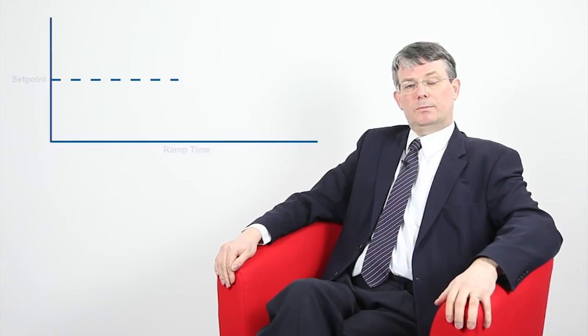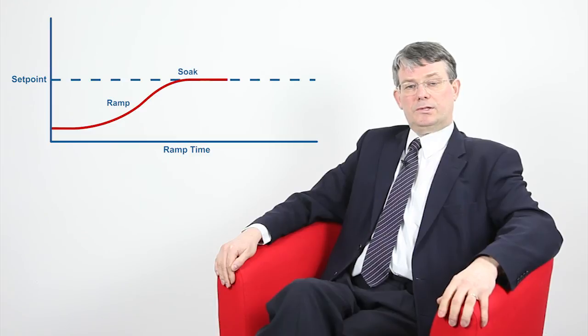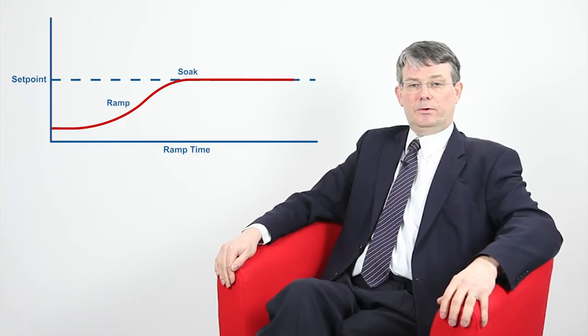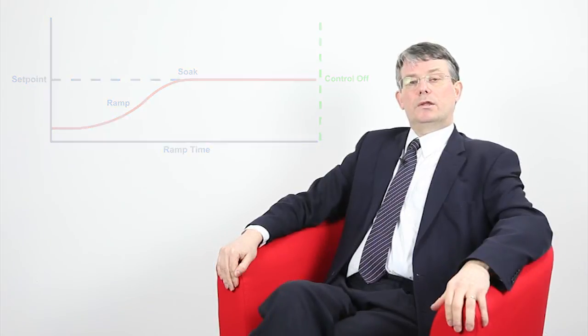Some of our controllers take the ramp soak concept further by adding a soak or dwell at the end of the ramp. Once the ramp is completed, instead of maintaining the final set point value indefinitely, it is held for a defined period of time and then the controller output is turned off, allowing the process to fall naturally. This may be used in a simple heat treating process where a controlled warm-up is required followed by a sustained period at a fixed temperature.